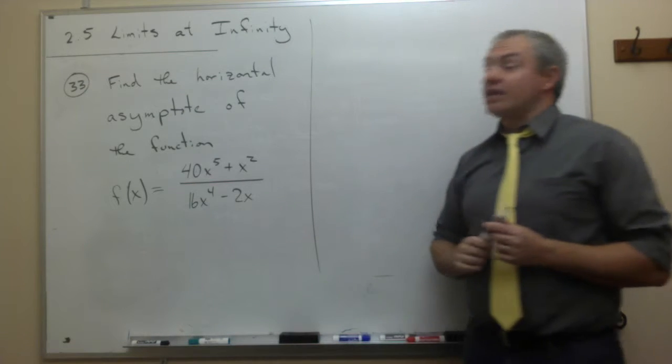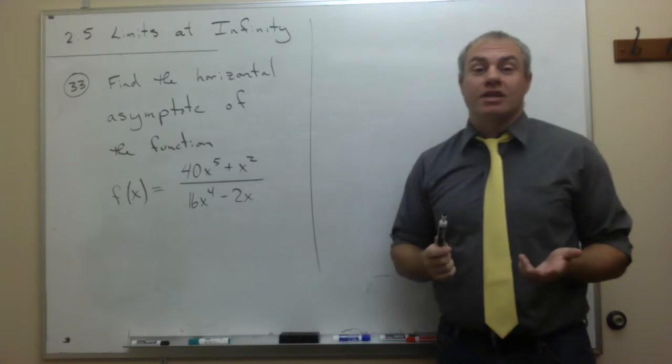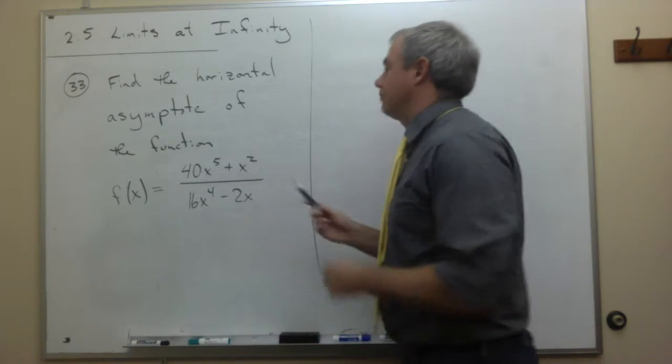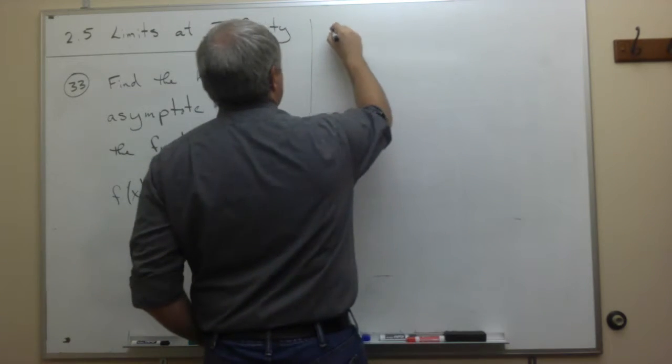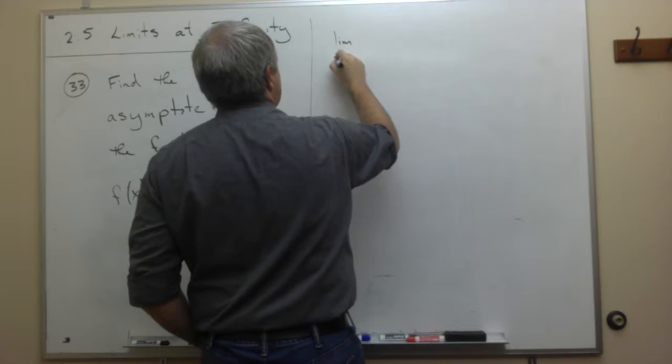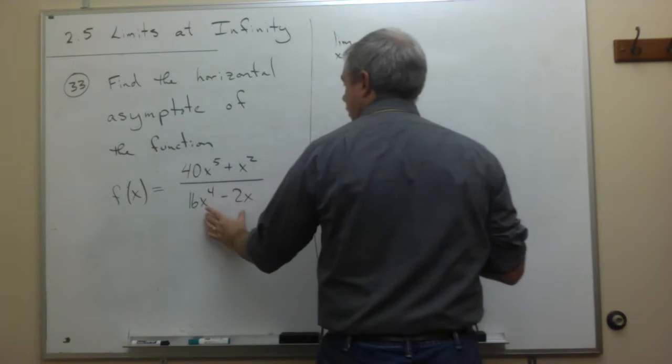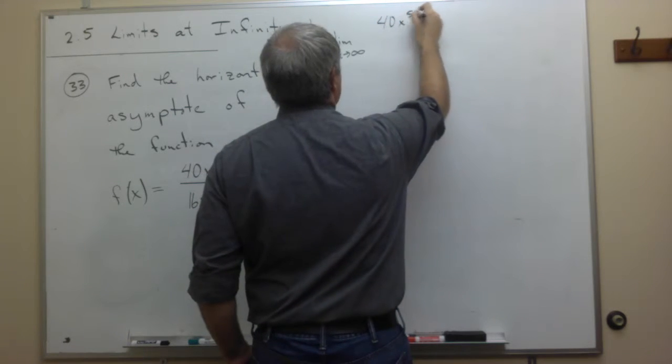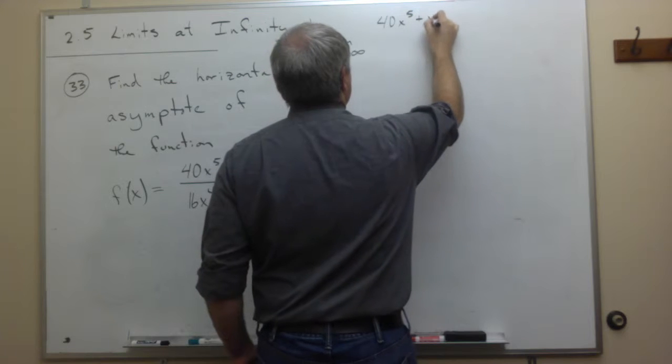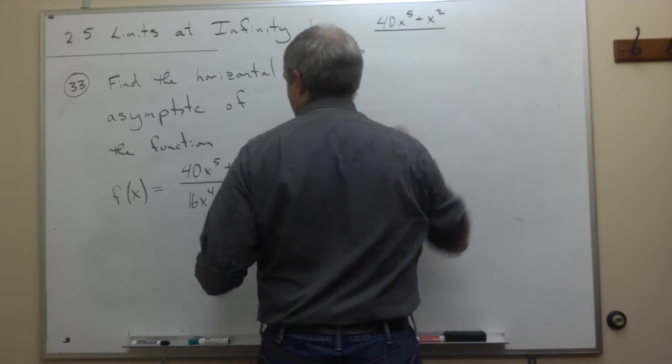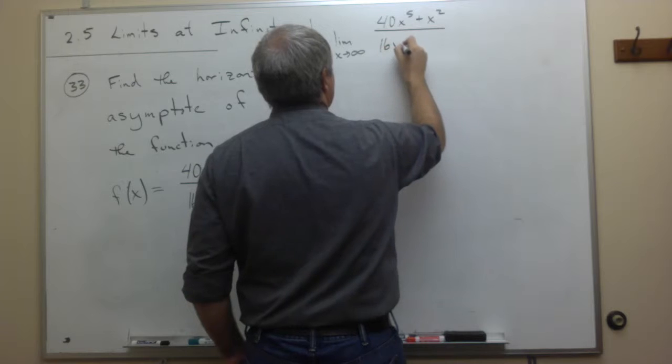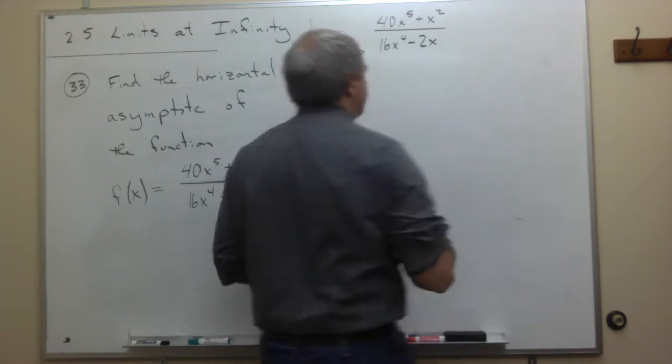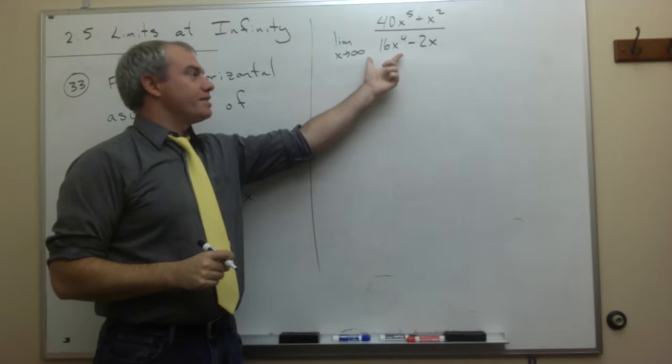And we know that the way that we find a horizontal asymptote is we're going to take the limit as x goes to infinity of the function. So let's take the limit as x goes to infinity of our function. So that's 40x to the fifth plus x squared divided by 16x to the fourth minus 2x. And we want to find this limit.